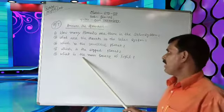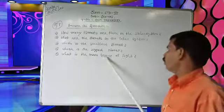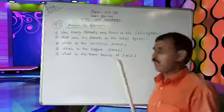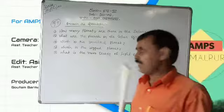4. What is the biggest planet? 5. What is the main source of light? 6. What is the largest planet of the solar system? 7. How many planets are there in the solar system?